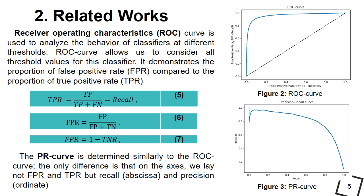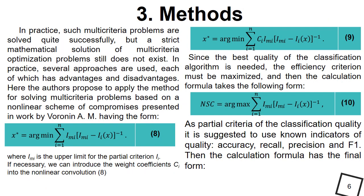The criterion for the quality of the family of algorithms is the area under the PR curve. Quite often when using different classification algorithms, similar quality indicators are obtained and it is difficult for a user to choose one of them.